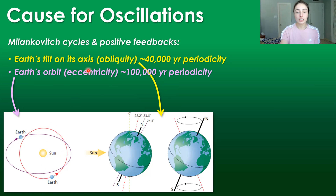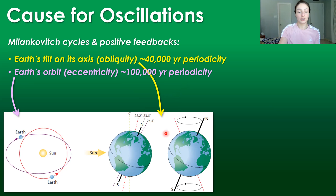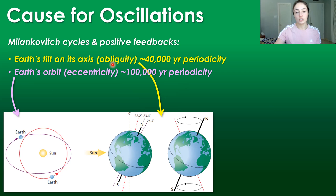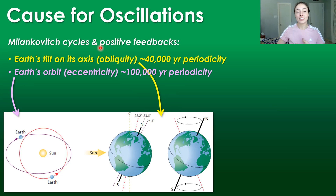These changes have a consistent periodicity that matches with the interglacial cycles. Earth's tilt on its axis — the obliquity cycle — has a periodicity of around 40,000 years, and Earth's orbit, whether more circular or elliptical — its eccentricity — has around a 100,000-year periodicity. We can see that early on in the ice age, the obliquity cycle had a stronger correlation to the glacial cycles, whereas later in the ice age, Earth's eccentricity cycle has taken over control of the length of the interglacial cycles.